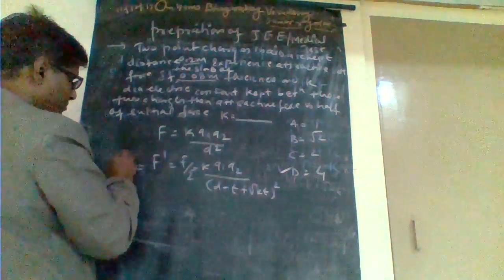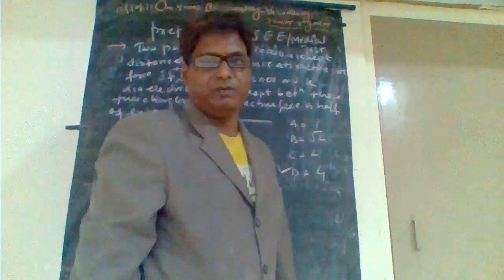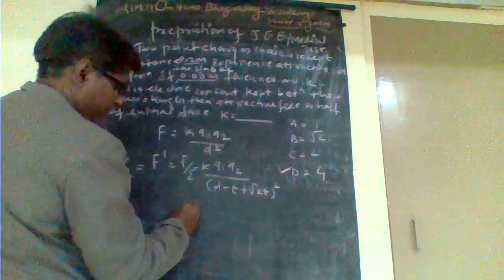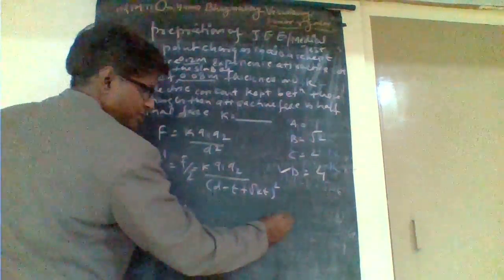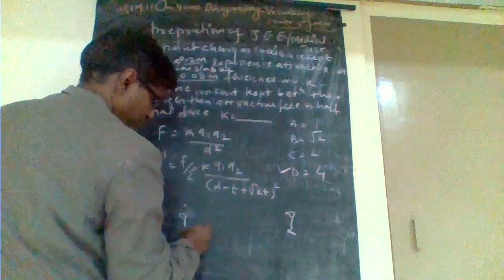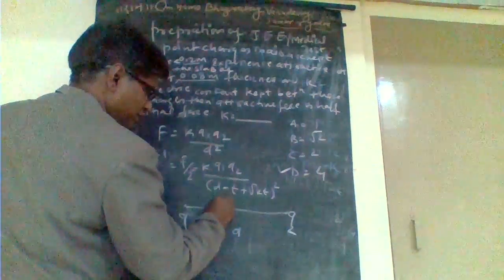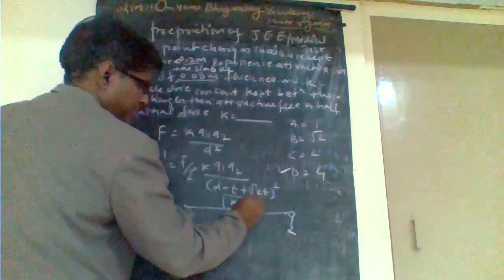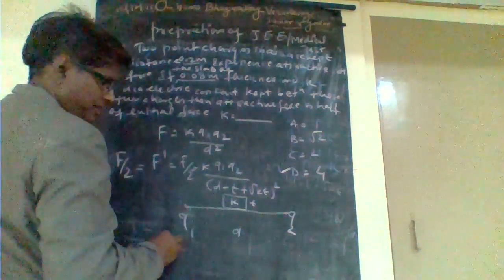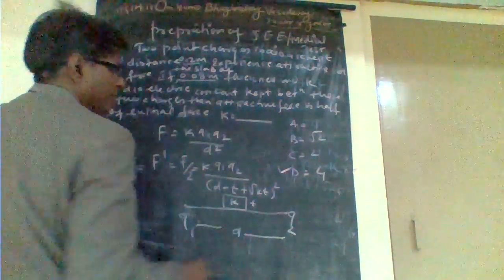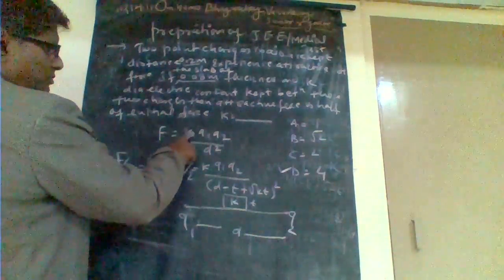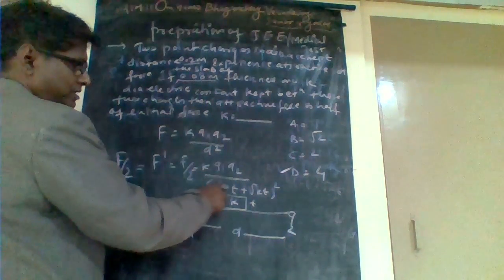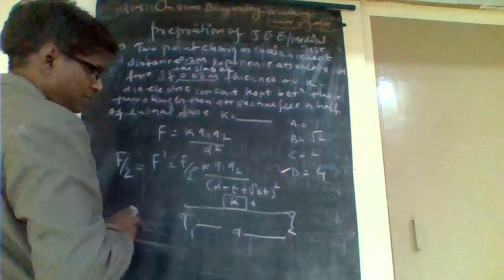It is given that F dash is half of the initial force. Suppose the two point charges q1 and q2 are kept at a distance d, and a dielectric slab of dielectric constant k and thickness t is placed between them. So F equals k·q1·q2 upon d squared and F dash equals F by 2, equal to k·q1·q2 upon (d minus t plus root k·t) whole squared.